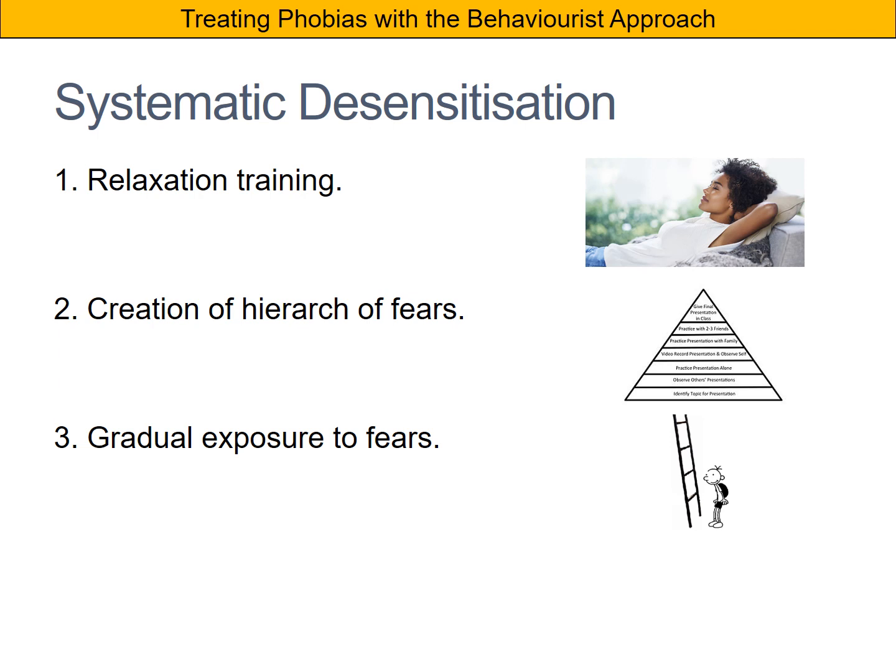After this, the therapist and the individual would work together and the individual would be gradually exposed to each of their fears, starting with the one at the bottom of the hierarchy. Using a spider phobia as an example, at the bottom of the hierarchy we might have a picture of a spider. The individual would spend time being exposed to that picture, using the relaxation training they learnt earlier to keep calm. Once calm at that level, they move on to the next step — perhaps being in the same room as a spider in a glass tank on the opposite side of the room.